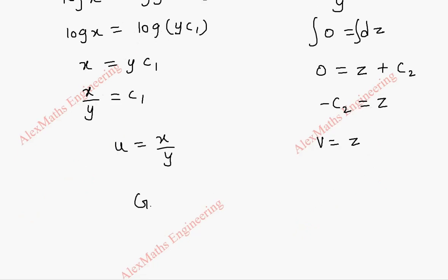Now the general solution is f of u, v equal to 0. So f of x by y, z equal to 0.